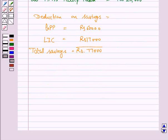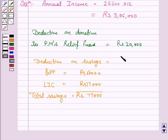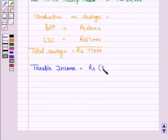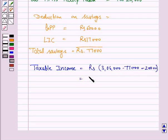We have to find the taxable income by subtracting the total savings and the donations made by him from his annual income. So the taxable income is Rs 3,06,000 minus Rs 77,000 minus Rs 20,000, and that is Rs 2,09,000.